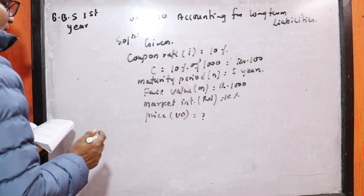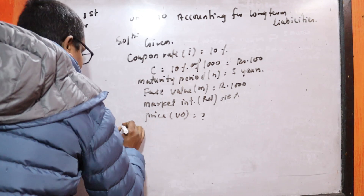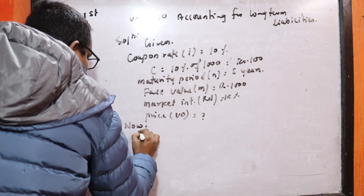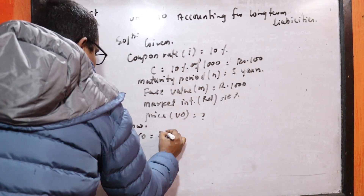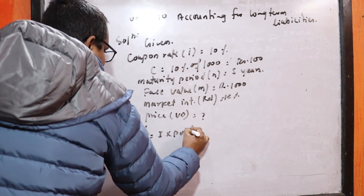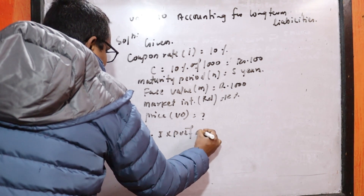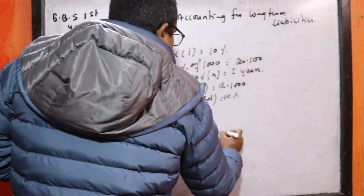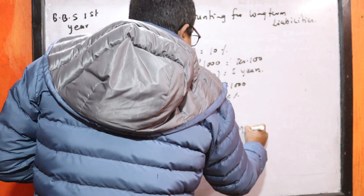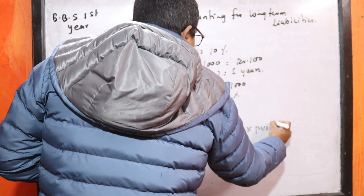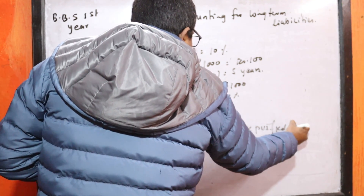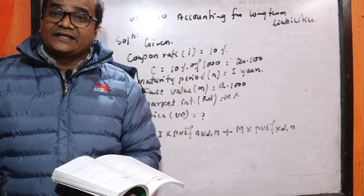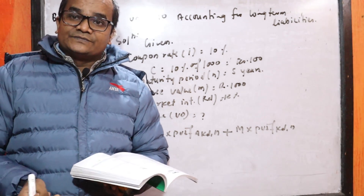So P0 or B0 equals i multiplied by PVIFA(kd, n) plus M multiplied by PVIF(kd, n). This is the formula for the bond price.